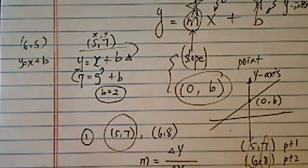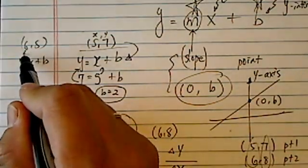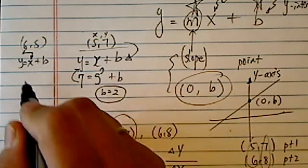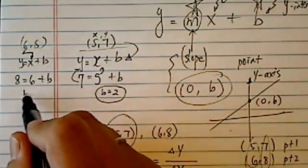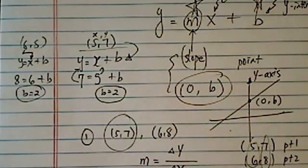y is equal to x plus b. This is your x. x is 6. y is 8 plus b. And what do you know, b is exactly the same.